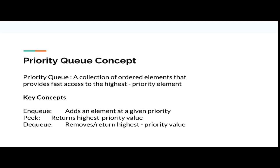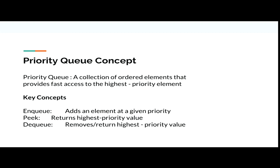It is a collection of ordered elements that provides fast access to the highest priority element. Here are some of the key concepts, which are Enqueue, Pick, and Dequeue. This is an overview of how it works, and this is the code that was actually run behind the algorithm of the 15th puzzle game that Clarence was playing.